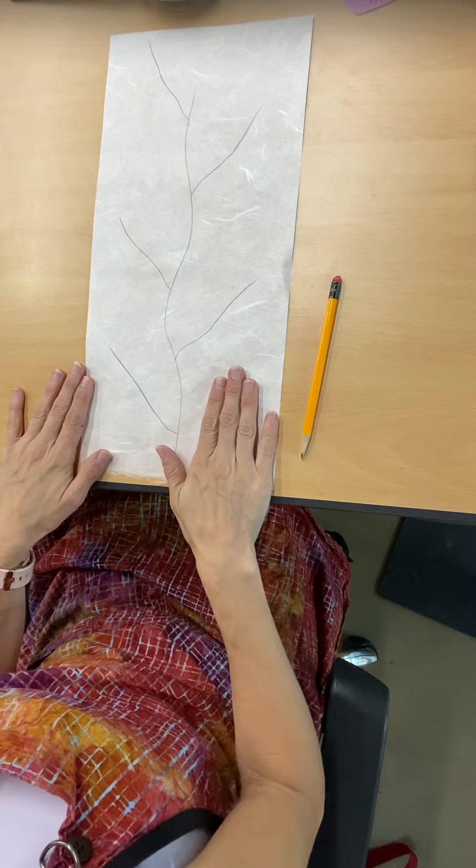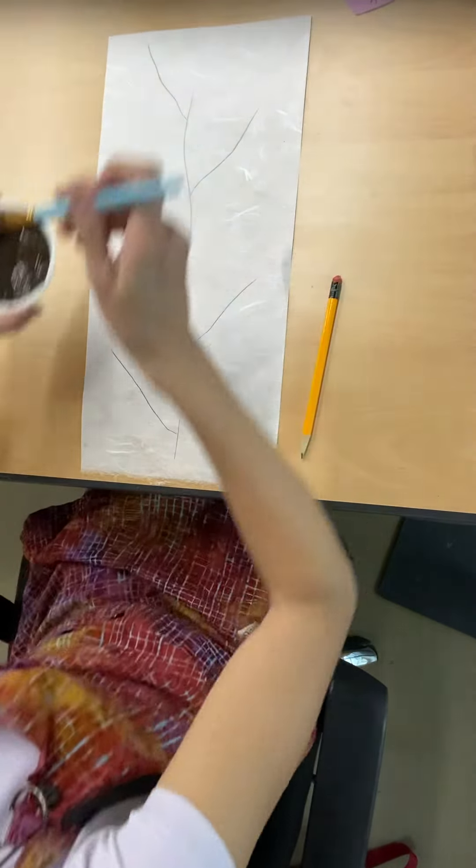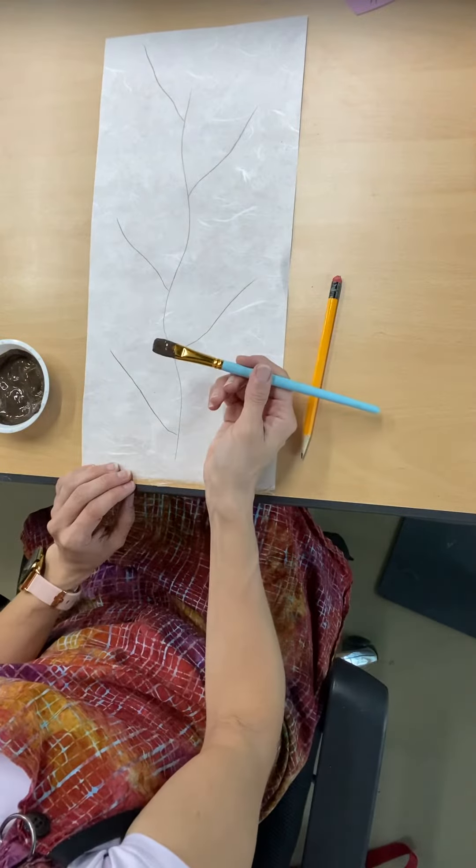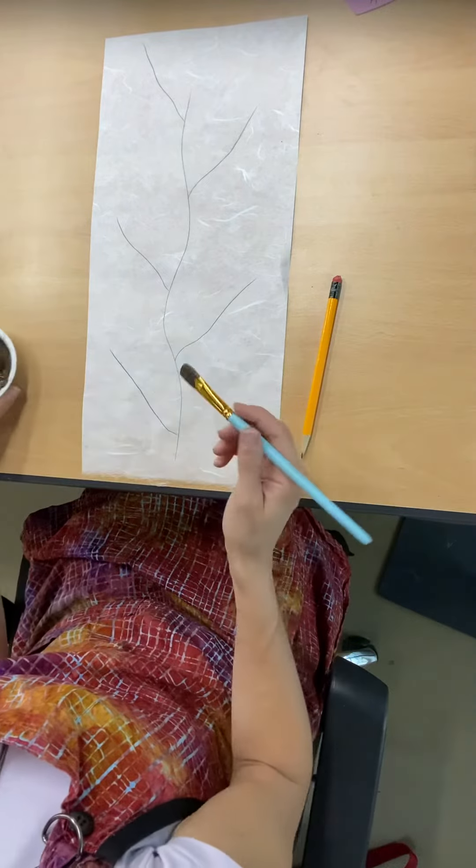After you draw, we're going to take our paintbrush and go over the tree with the paint. Everyone's going to get a little bit of paint like this, and we're going to go over it together.